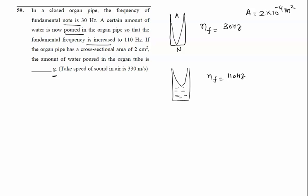This is antinode, this is node. This distance is lambda by 4, and let this distance be L. So lambda by 4 equals L, therefore lambda equals 4L.